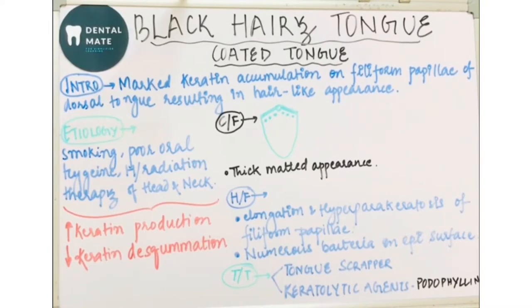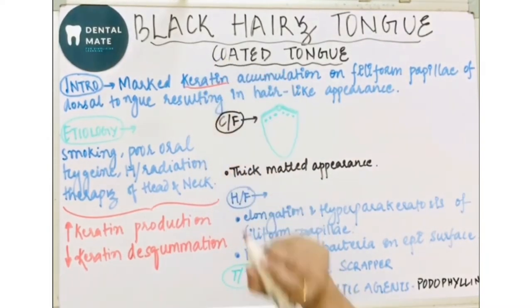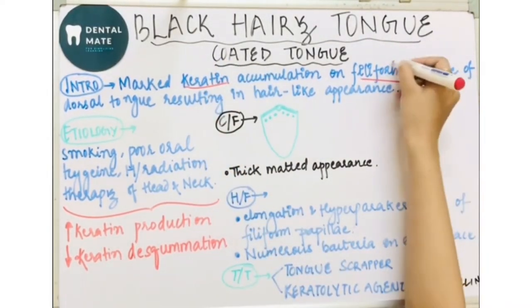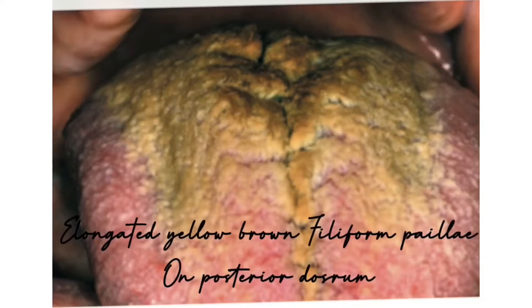Today let us study what is black hairy tongue. Black signifies the color, hairy means hair-like growth, and tongue is the location. In black hairy tongue, there is marked keratin accumulation on the filiform papillae. There is marked keratin accumulation on the filiform papillae on the dorsal surface of the tongue, resulting in a hair-like appearance.